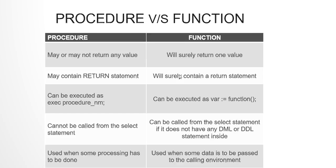A procedure may have a return statement, but it is very different from a function's return statement. When a procedure has a return statement, it just abruptly returns control back to the calling environment. Whereas a function has a return clause in its definition itself — you define the return data type. A function's return statement must include an expression like a variable, number, or character, whereas a procedure's return is just 'return' followed by a semicolon.